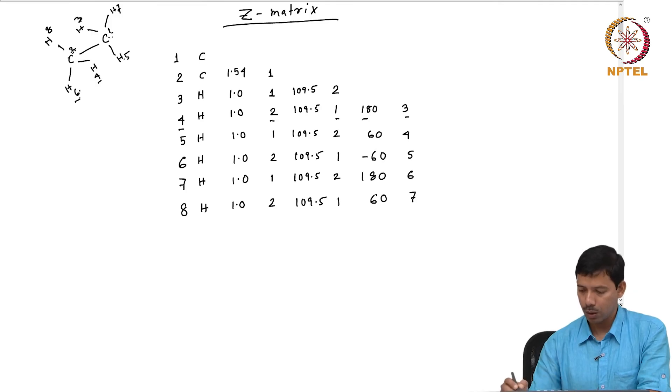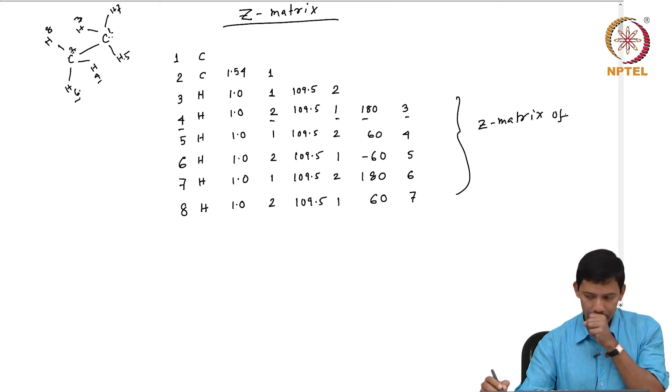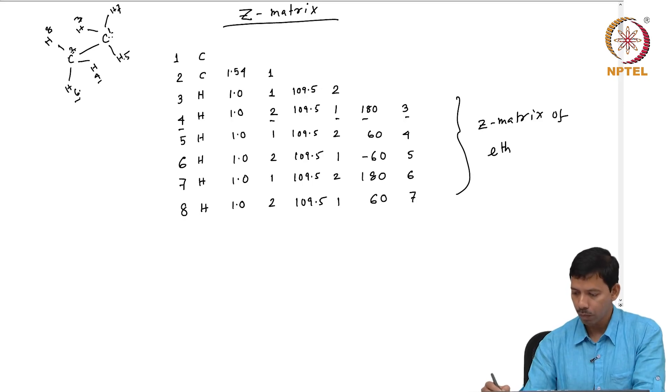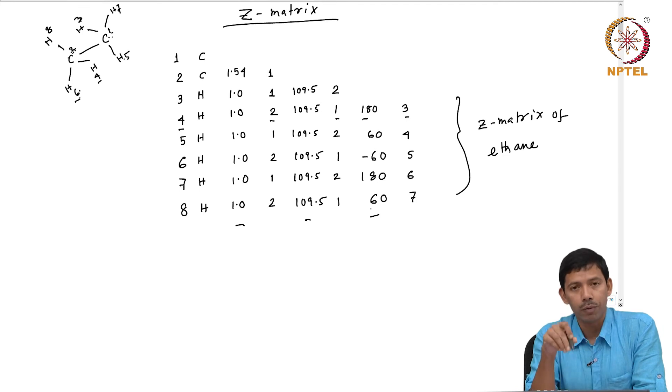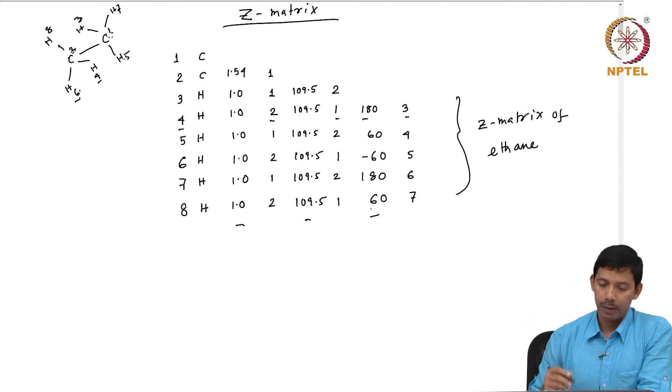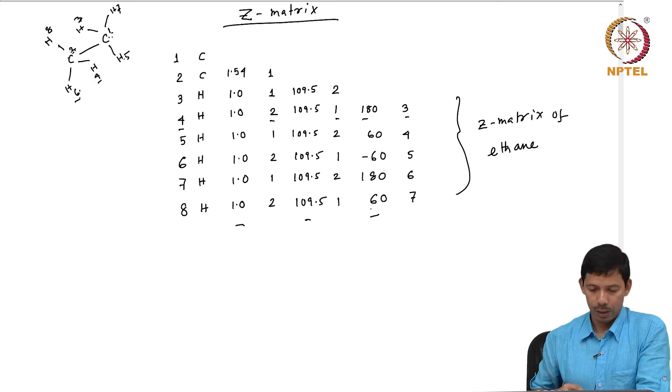This is the Z matrix of ethane. If I have Z matrix, then I can easily get the bond angle and the dihedral values quickly instead of looking at the x, y, z coordinates of each atom and calculate bond angle and dihedral to make my calculations faster.